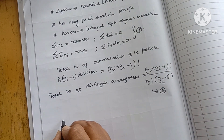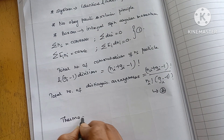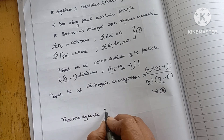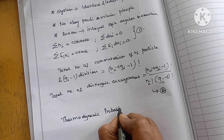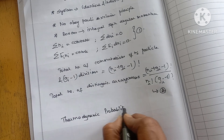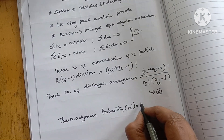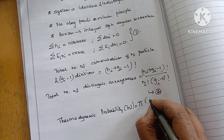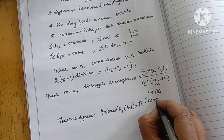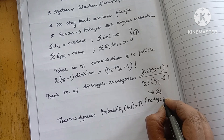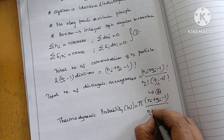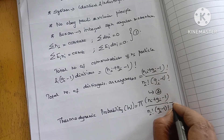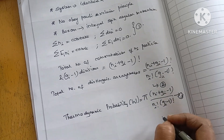Next is thermodynamic probability, represented by the letter W, which is equal to the product over all i of (Ni + Gi - 1) factorial divided by Ni factorial times (Gi - 1) factorial. This is equation number 3.